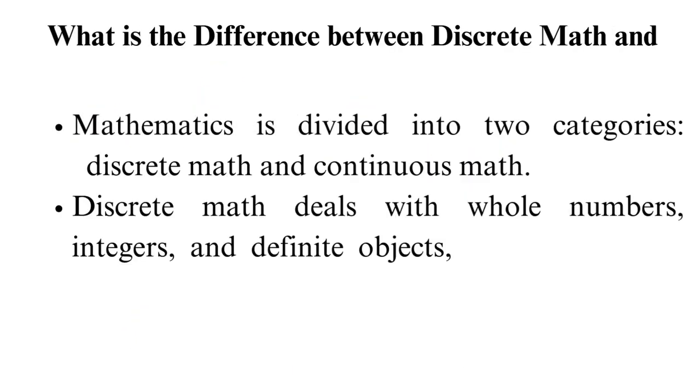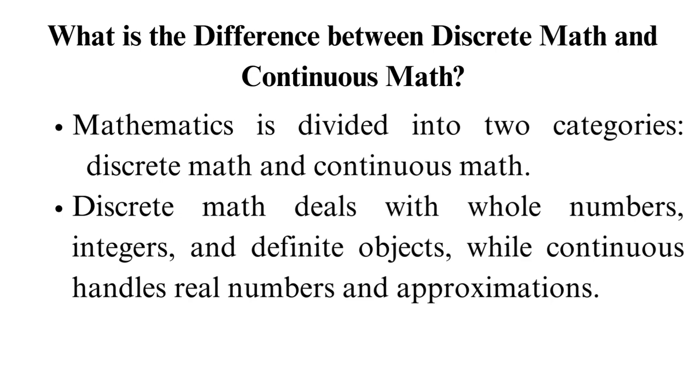What is the difference between discrete math and continuous math? Mathematics is divided into two categories: discrete math and continuous math. Discrete math deals with whole numbers, integers, and definite objects, while continuous handles real numbers and approximations.